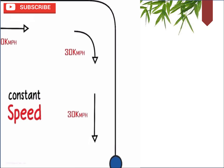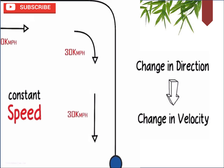Now, in this image, the object is moving at a constant speed of 30 kilometers per hour. But at some point in time, it changes its direction. Is there an acceleration? The answer is yes — there is an acceleration even though the object has a constant speed. Because at a certain point in time, as you can see in this corner, the object changes direction. And according to our past lesson regarding velocity, if there is a change in direction, there is a change in velocity, and when there is a change in velocity, there is acceleration.